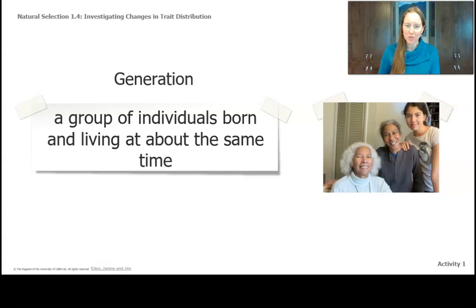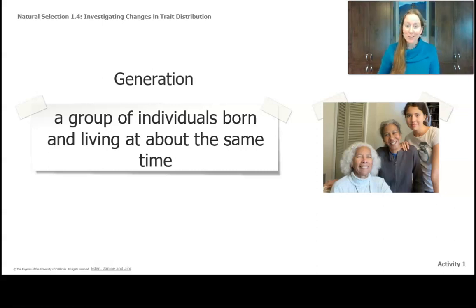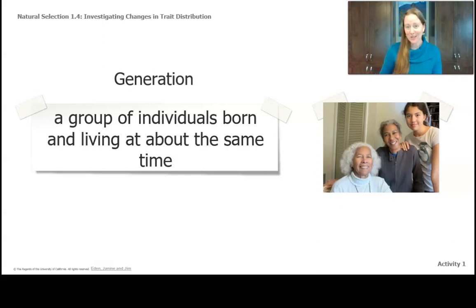The next word to add to our growing vocabulary list for Natural Selection is generation. A generation is a group of individuals born and living at about the same time. For example, you and your brothers or sisters are a generation, your parents are another generation, your grandparents another, and your great-great-grandparents yet another. Those groups living at about the same time — that's a generation.